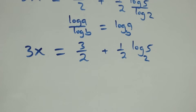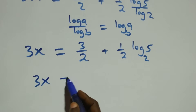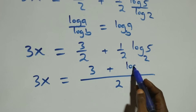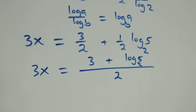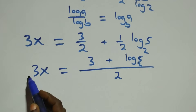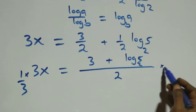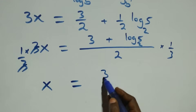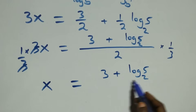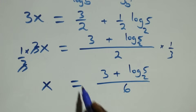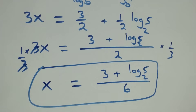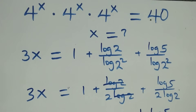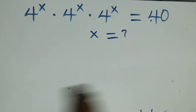Next step: we bring it together as one fraction. Three x equals three over two plus log five base two over two, which gives three x equals three plus log five base two, all over two. Then we multiply both sides by one over three. Three cancels, and we have x equals three plus log five base two, all over six. That is the value of x. Let's check if this satisfies the given problem by substituting the value of x.